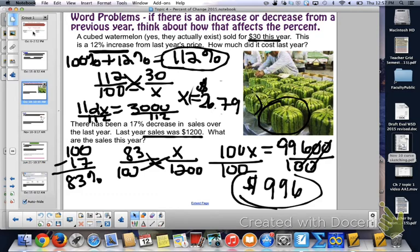Notice that in the first example, 30 was on top and x was on the bottom. In the second example, x was on the top. It all depends on what you have. If it's an increase or decrease of sales, last year's price always goes on the bottom—the original price on the bottom, and the new price, this year's price, on top. You can stop the video now and do the you-try problems on the next page.